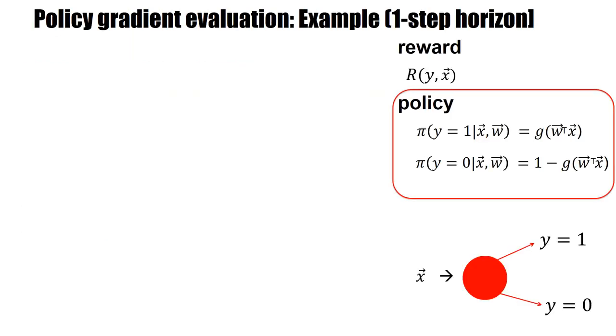So we have a single neuron which receives input x and it can give two different outputs, either y equals 1 or y equals 0. And these outputs correspond to the two different actions. The policy is given by this expression here. And it's just the standard function, the nonlinear function of a neuron. This is the case for output 1. Now for output 0, it's the complement. It's just 1 minus g.